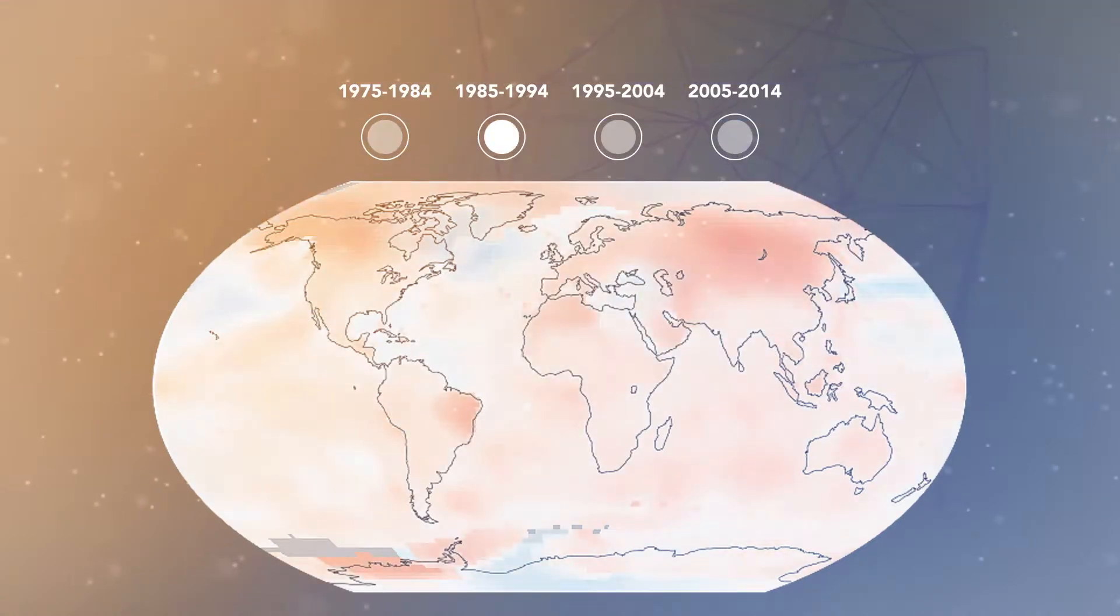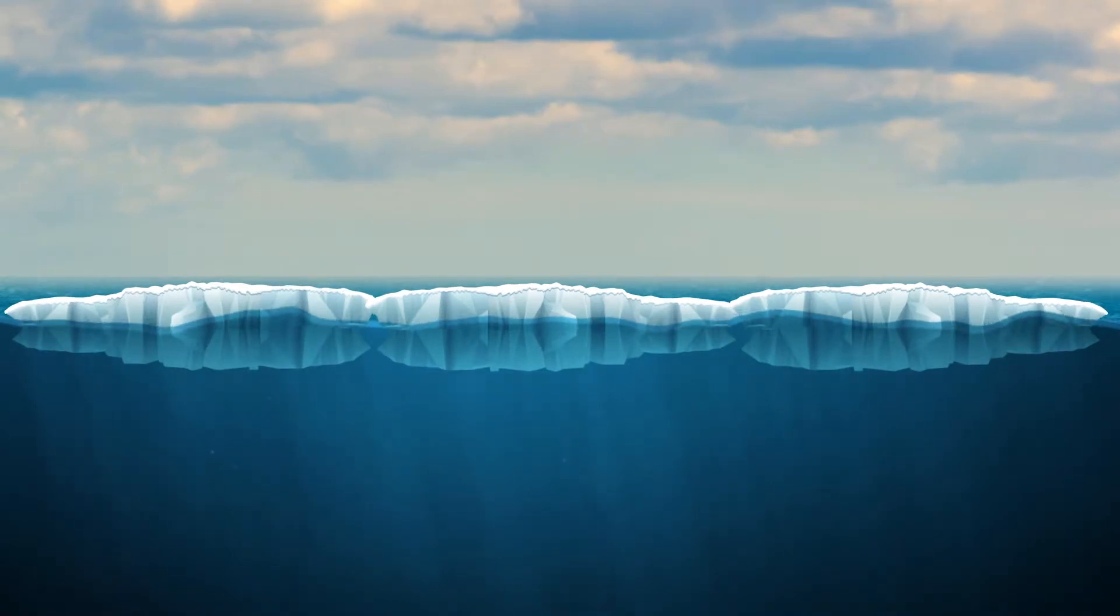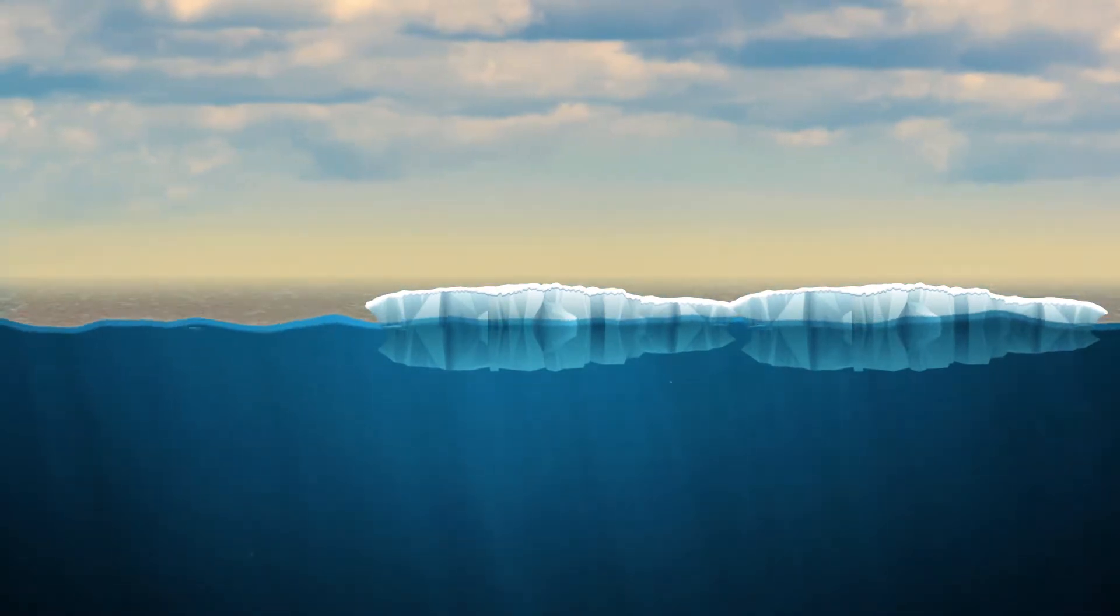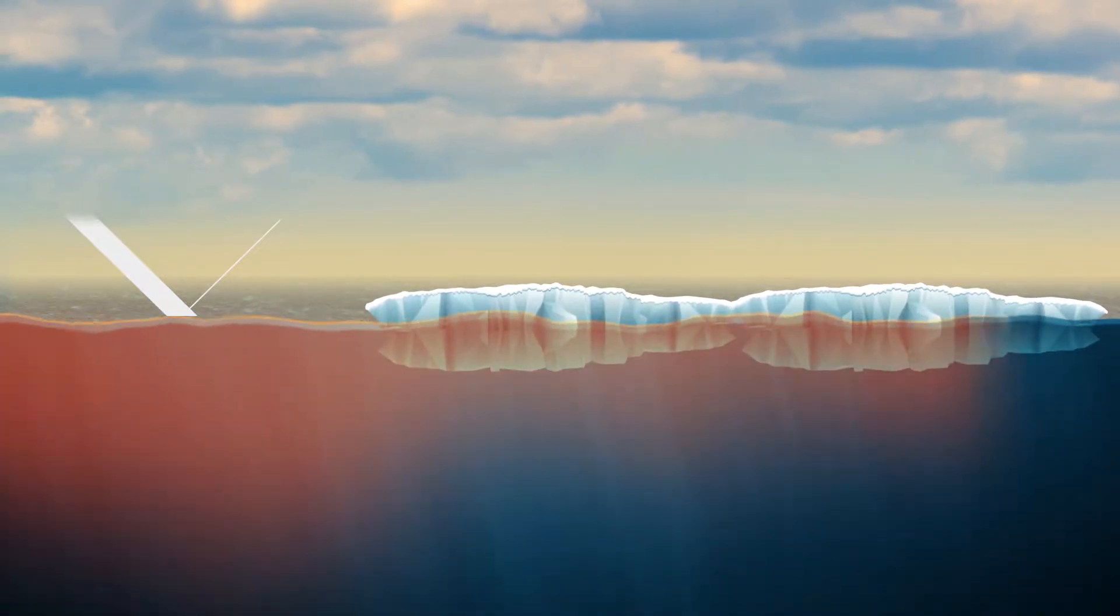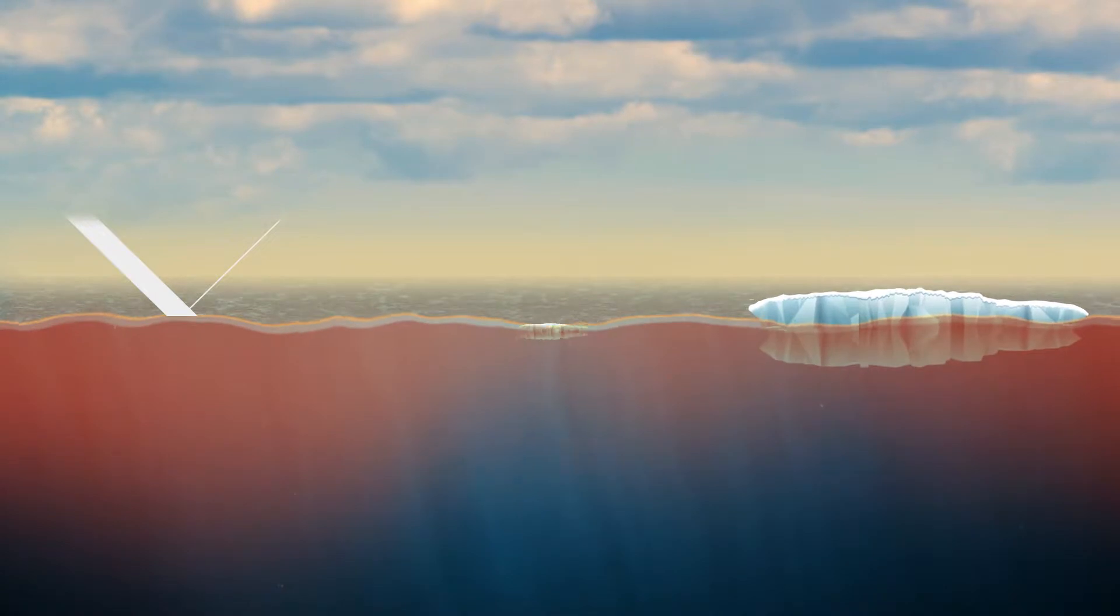However, rising surface temperatures are causing sea ice formations to melt. As the ice melts due to warming surface temperatures, a larger percentage of the Earth's ocean is exposed. Because the ocean has a lower albedo than ice, the ocean begins to warm. This ocean warming, in turn, causes the sea ice on top of it to melt even faster.